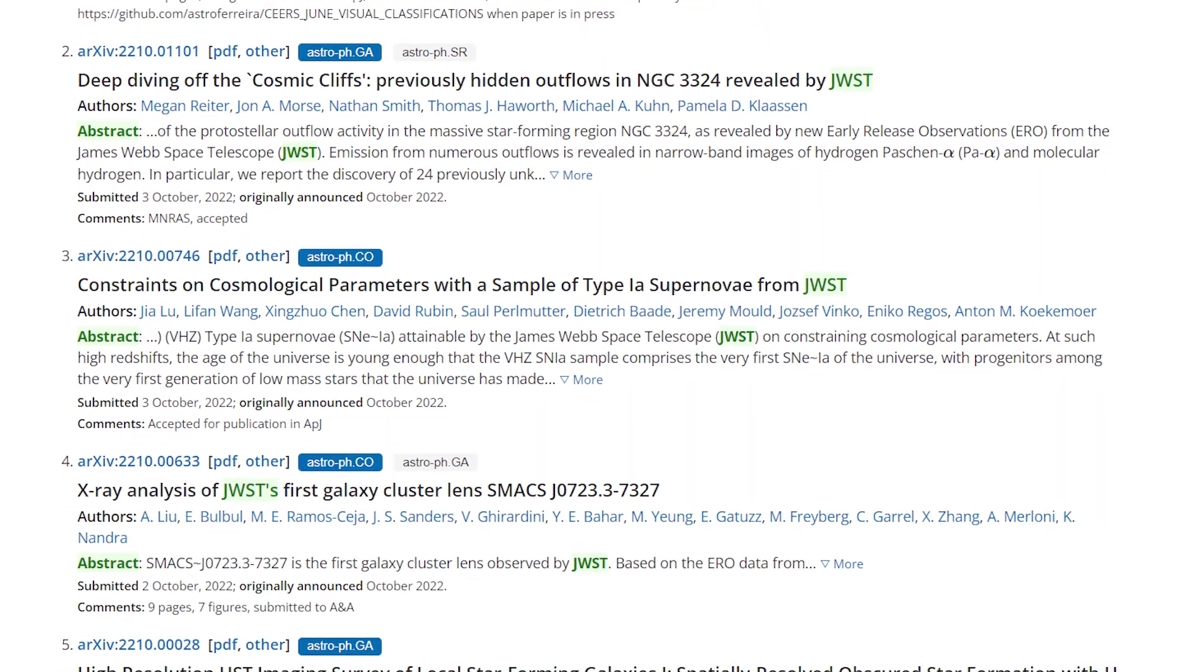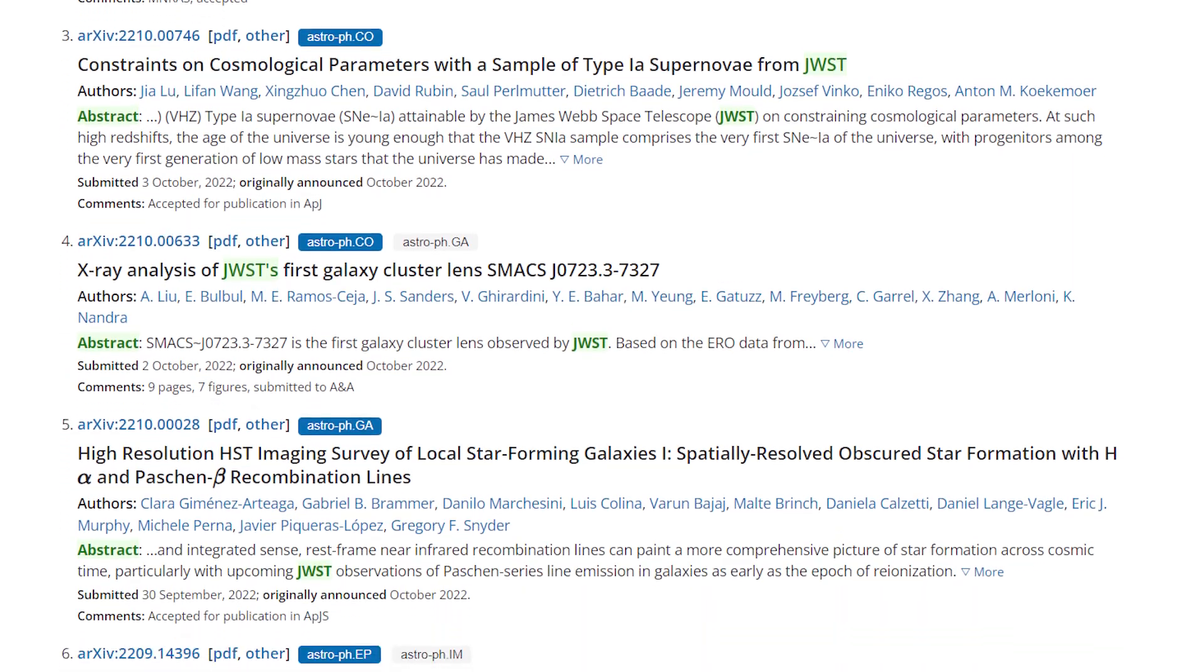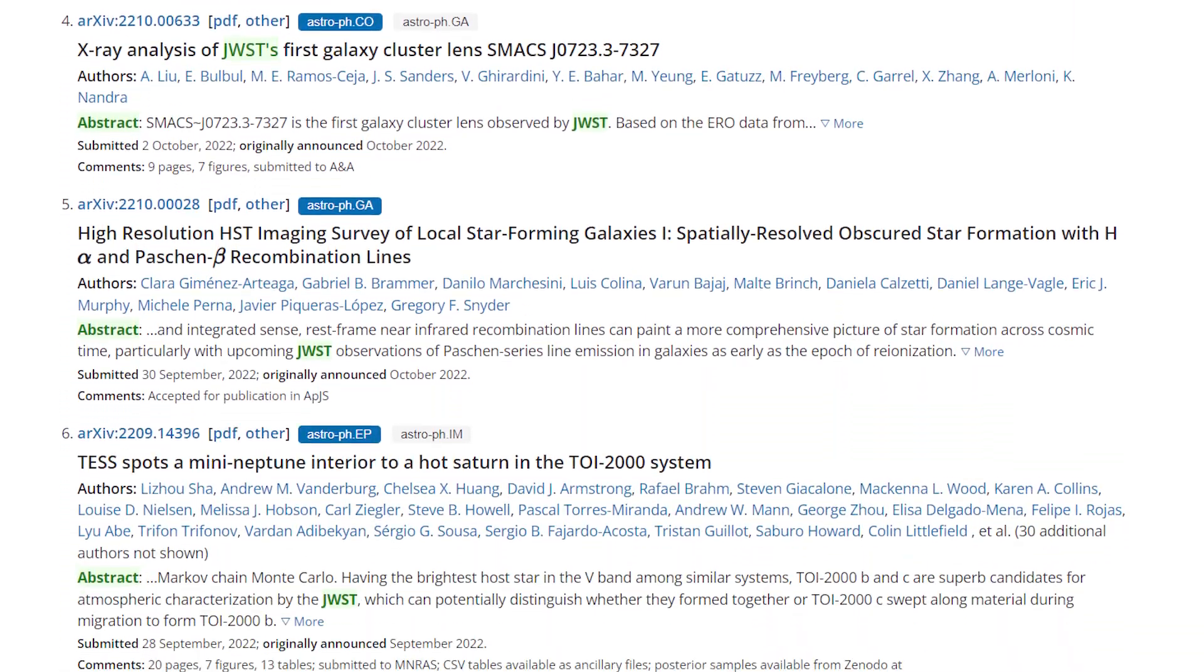But after the initial web data release on July 14th, unreviewed papers started to circulate on the archived preprint server, reporting a number of potential candidates for the most distant galaxy ever found.